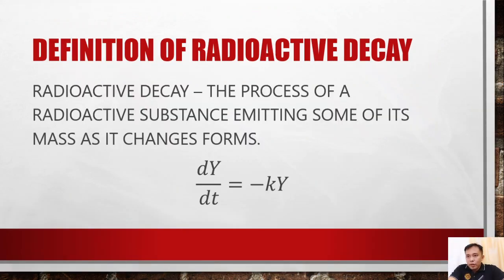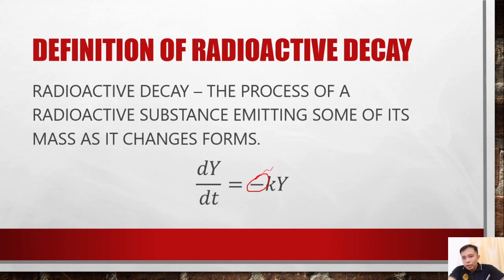The definition of radioactive decay is the process of a radioactive substance emitting some of its mass as it changes form. It is best described by dy, or the change of mass, per dt, or the change of time, which is equal to negative ky, where negative indicates that it is losing mass, k is the constant, and y is the initial mass.